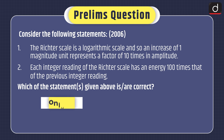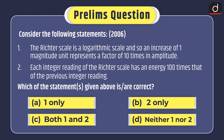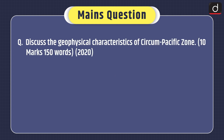Now it's time for practice questions. First, a prelims question from the 2006 exam: Consider the following statements. 1. The Richter scale is a logarithmic scale, and so an increase of one magnitude unit represents a factor of 10 times in amplitude. 2. Each integer reading of the Richter scale has an energy 100 times that of the previous integer reading. Which of the statements given above is or are correct? 1 only, 2 only, both 1 and 2, or neither 1 nor 2? You can send the answer in the comment section. The main question, asked in the 2020 exam, is: Discuss the geophysical characteristics of the circum-Pacific zone.